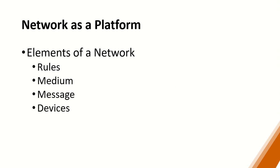Now let's proceed to the network as a platform. These are the elements of the network — meaning these elements should all be available for the network to function efficiently. We have the rules, the medium, the messages, and the devices. When we talk of rules, there must be an agreement on what protocols will be used — we must agree on some rules.